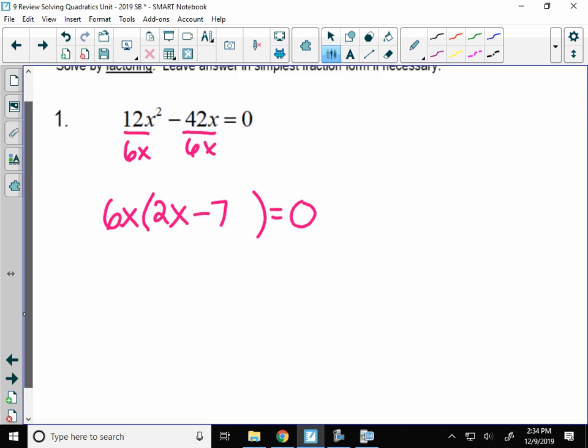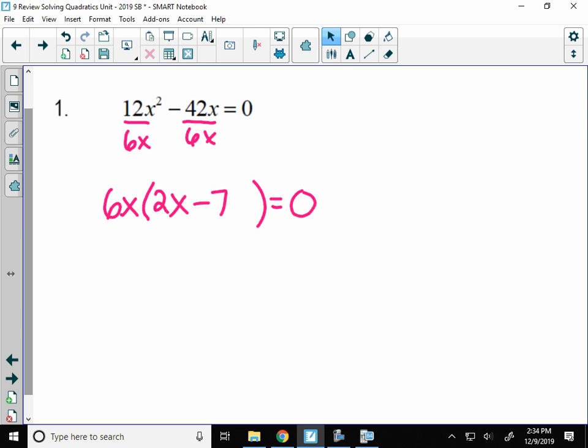Now, the zero product law says we can't just factor. We are trying to solve the quadratic. So what I do is I take every factor that has an x, so 6x and 2x minus 7, and set them equal to 0. Then I'm going to solve both of those for the value of x to get my solutions.